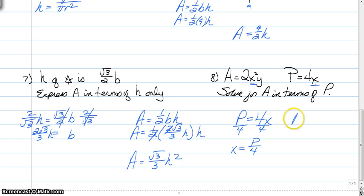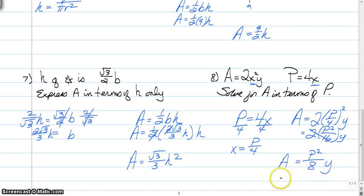And this is where the fun stuff happens. Now we're going to substitute that into our equation. A = 2. Now x is p/4 squared y. So now we have to square this. This is going to turn into 2 times p²/4² is 16y. And then we have 2 divided by 16, which is just going to simplify to 1/8. So our final answer is A = p²/8y. Or you can put the y on top if you prefer. You can have p²y/8. Either one of those is the correct answer.